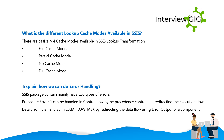There are basically three cache modes available in SSIS Lookup transformation: Full Cache Mode, Partial Cache Mode, and No Cache Mode. For error handling in SSIS packages, there are mainly two types of errors: Procedure Errors — handled in control flow by precedence control and redirecting the execution flow; Data Errors — handled in data flow by redirecting the data flow using the error output of a component.